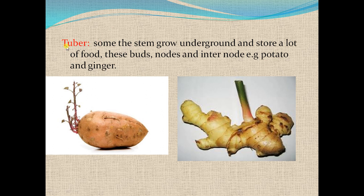Tuber — some stems grow underground and store a lot of food; these are called tubers. They have buds, nodes, and internodes. Examples are potato and ginger. You can see here this is a potato tuber with buds, and this is ginger, which also has small buds.